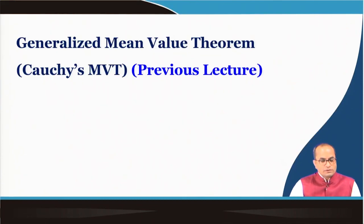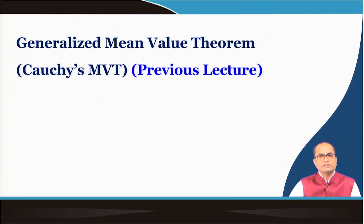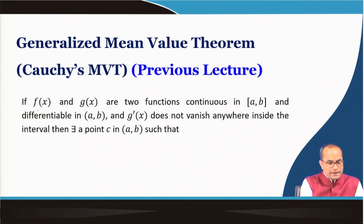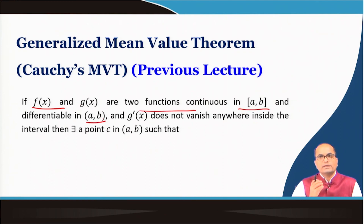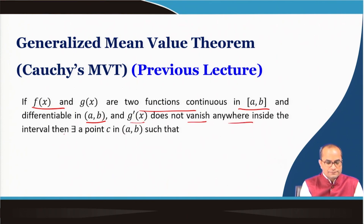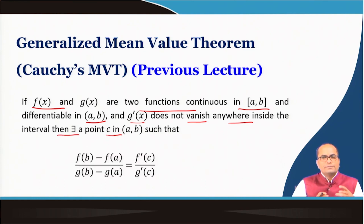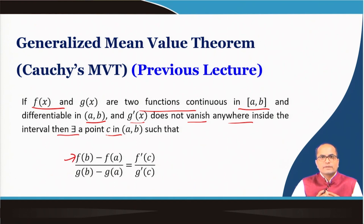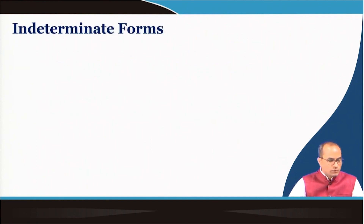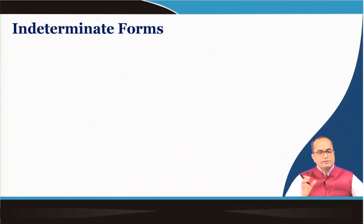Just to recall, here we will be using the Generalized Mean Value Theorem to prove L'Hôpital's rule. If f and g are two functions continuous in [a, b] and differentiable in the open interval (a, b), and g′(x) does not vanish anywhere inside the interval, then there exists a point c in the open interval (a, b) such that [f(b) − f(a)] / [g(b) − g(a)] is equal to the ratio of the derivatives at some point c, where c belongs to somewhere in the given domain.